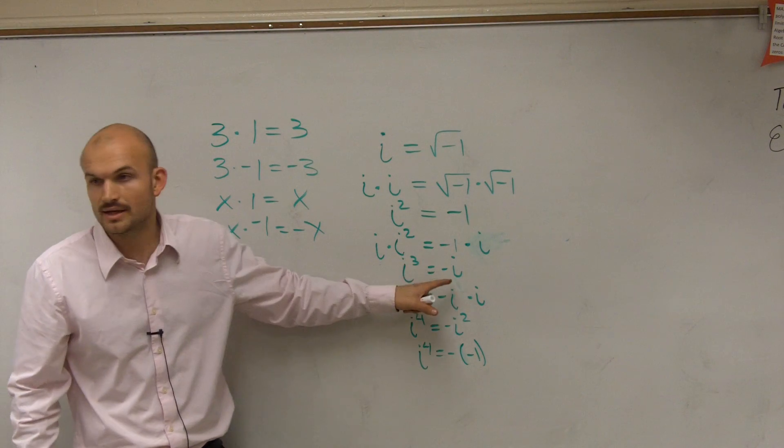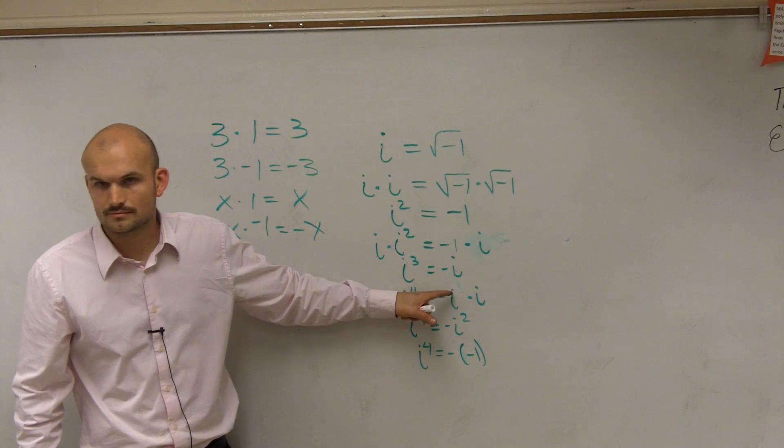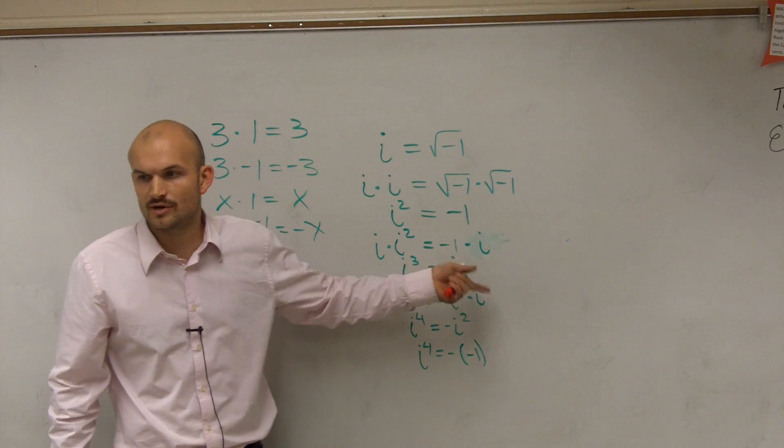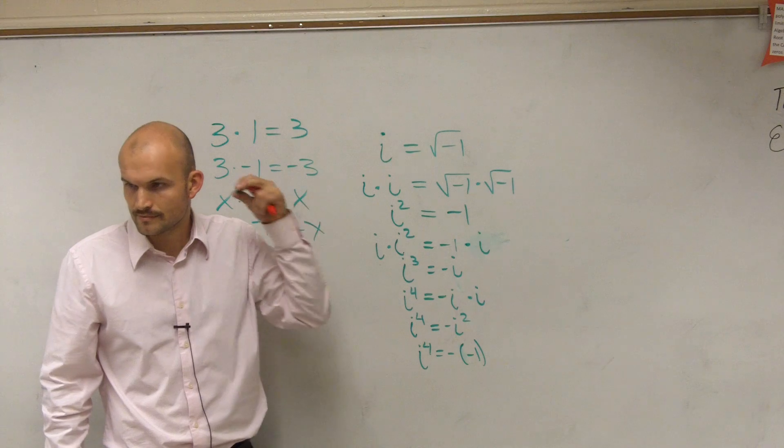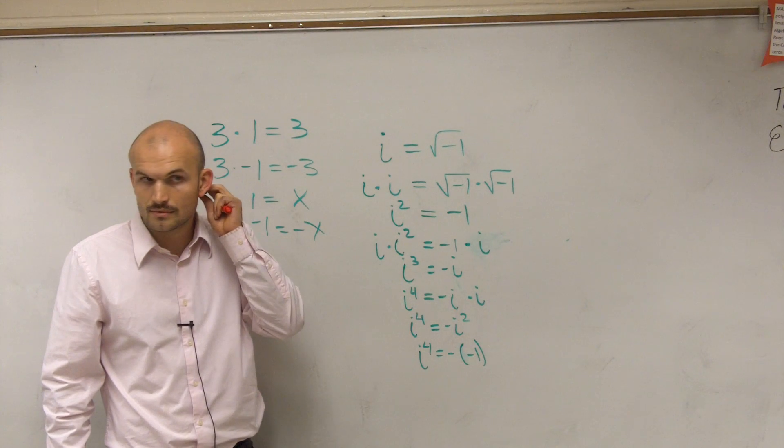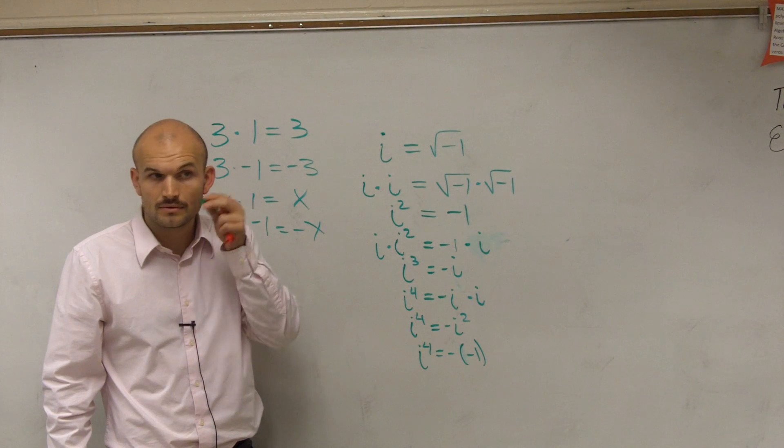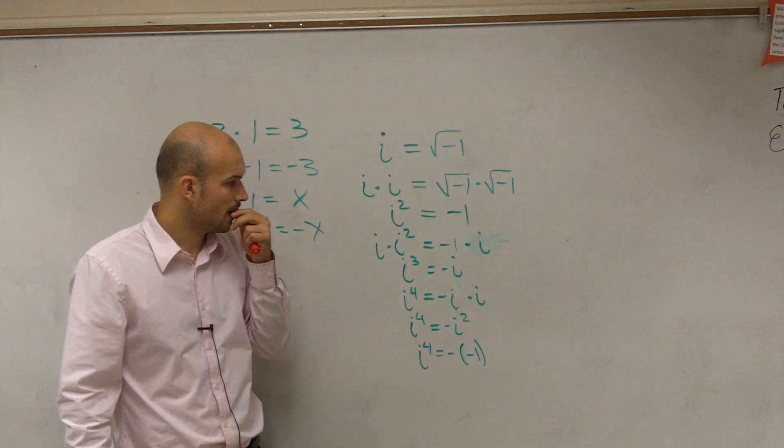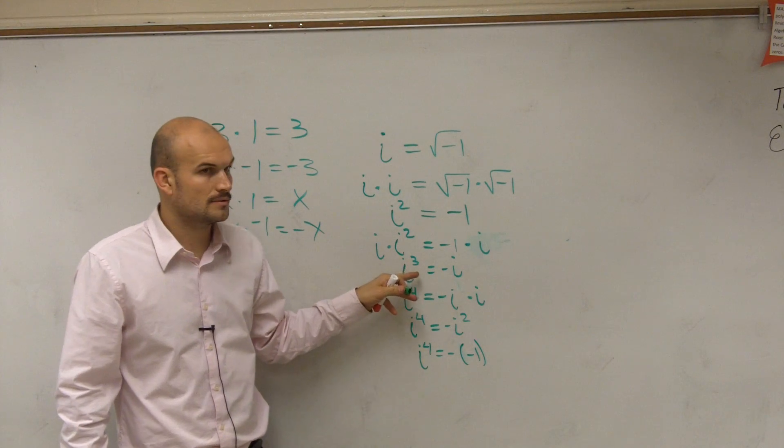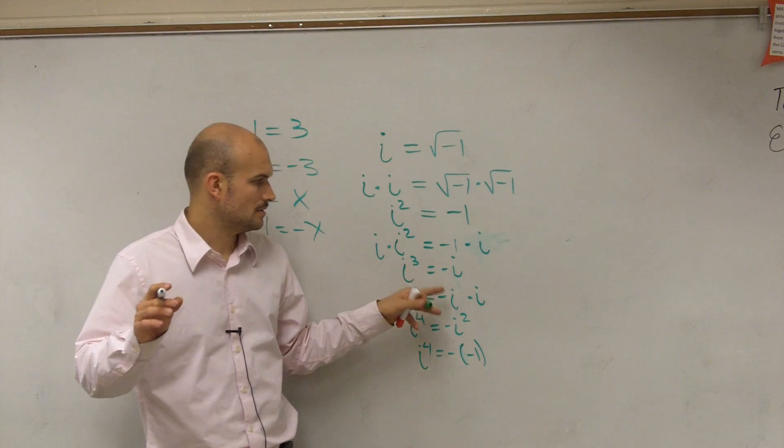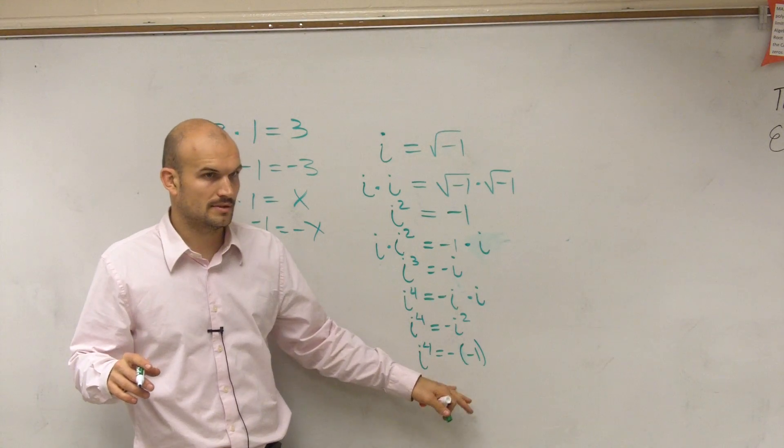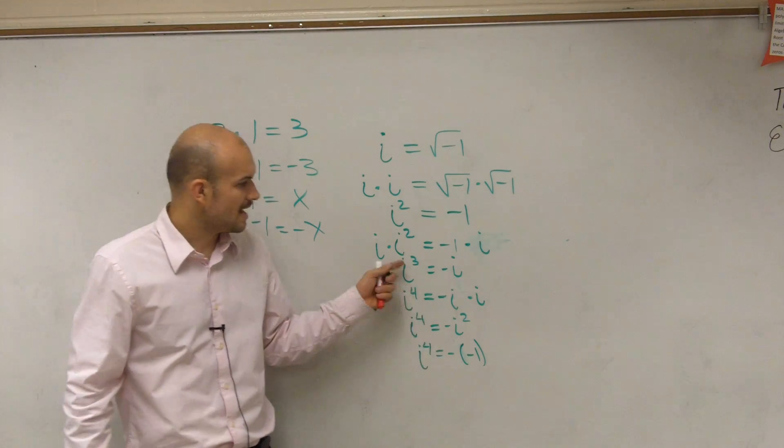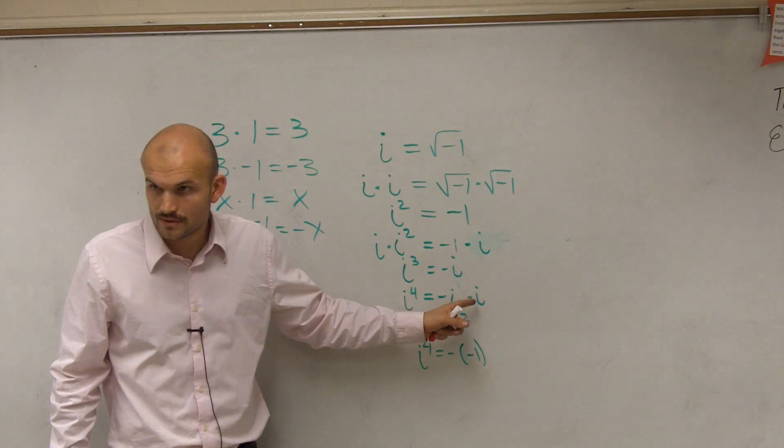Yeah? You just multiply it by negative 1 is going to make it negative. So i times negative 1 would be negative i. Yes, yes. So yes, i cubed equals negative i. Correct.